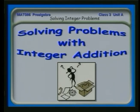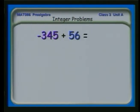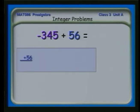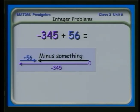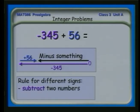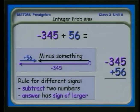Let's take a look at some problems. Minus 345 plus 56: we imagine the number line where we move 56 one way and 345 the other. The answer is going to be minus something because we're still going quite a ways to the left. Following the rule for different signs, we subtract: 345 minus 56 equals 289, and the sign is the sign of the larger number. So our answer is minus 289.